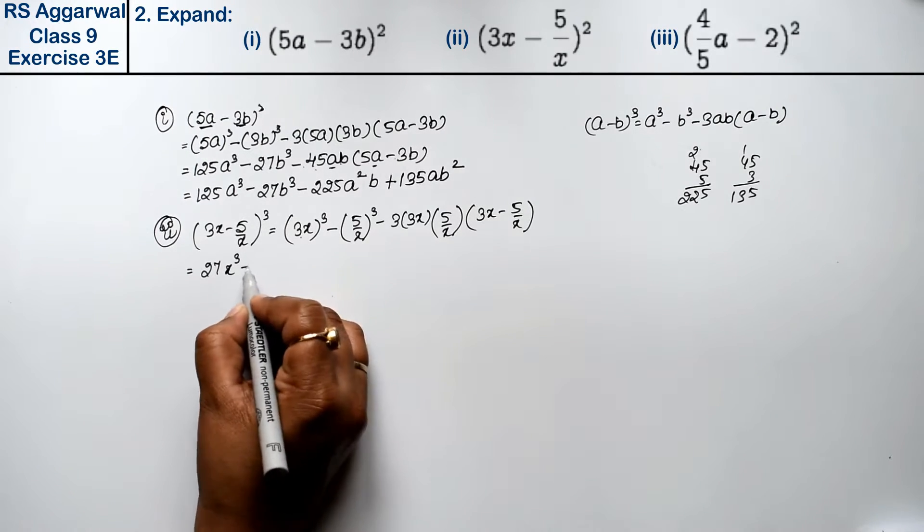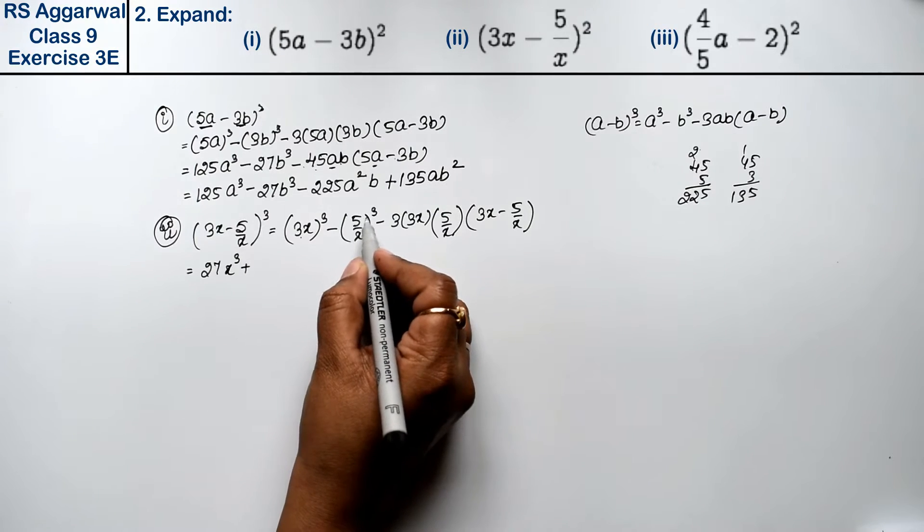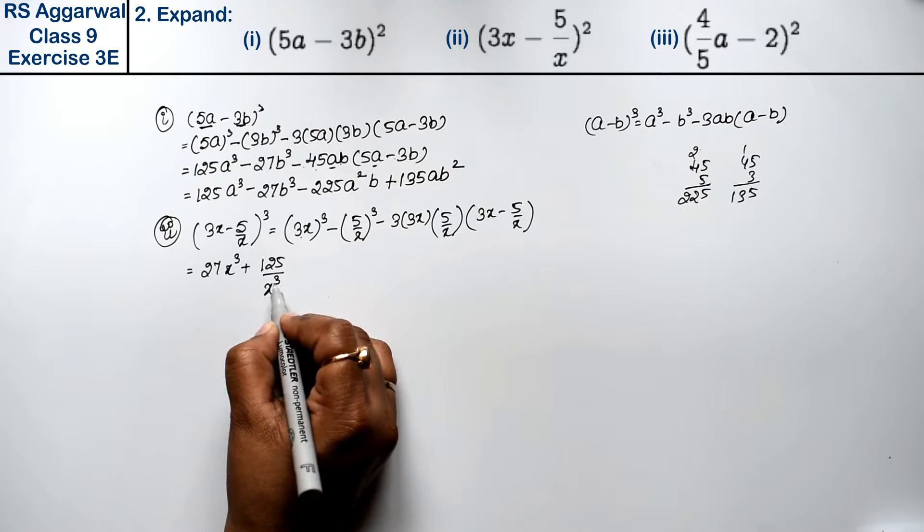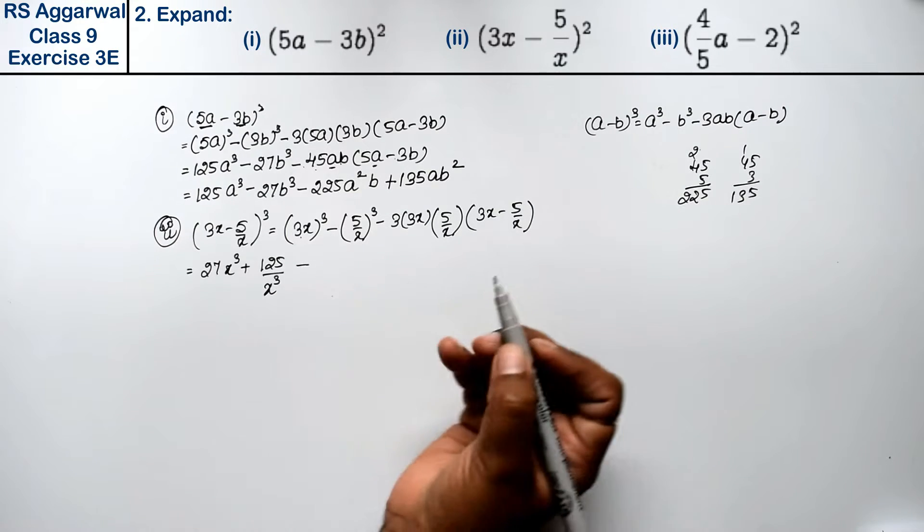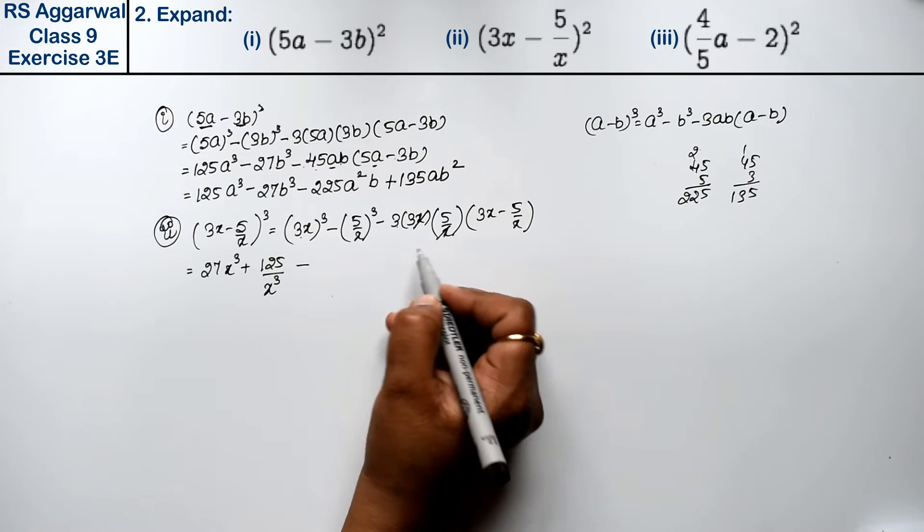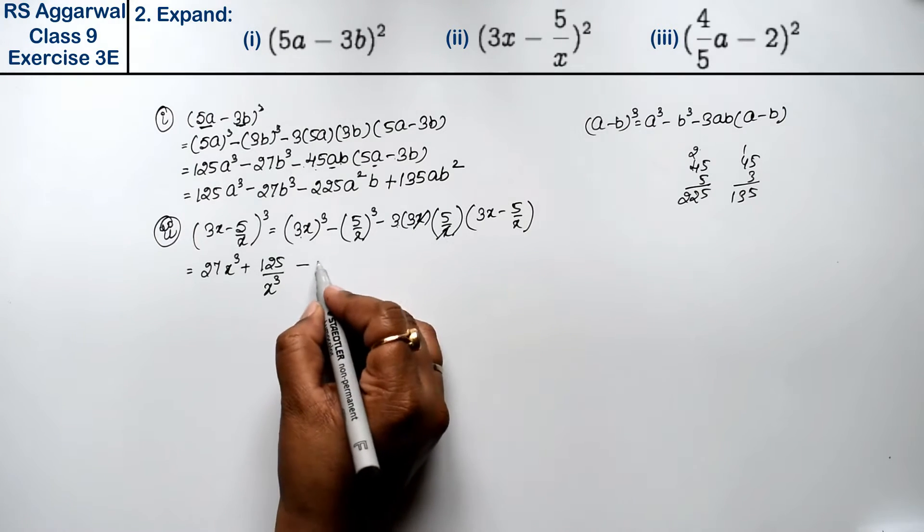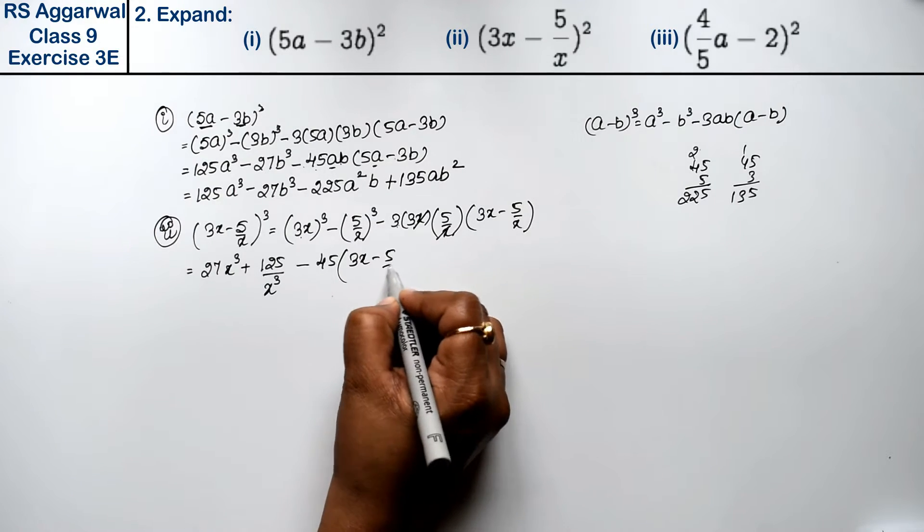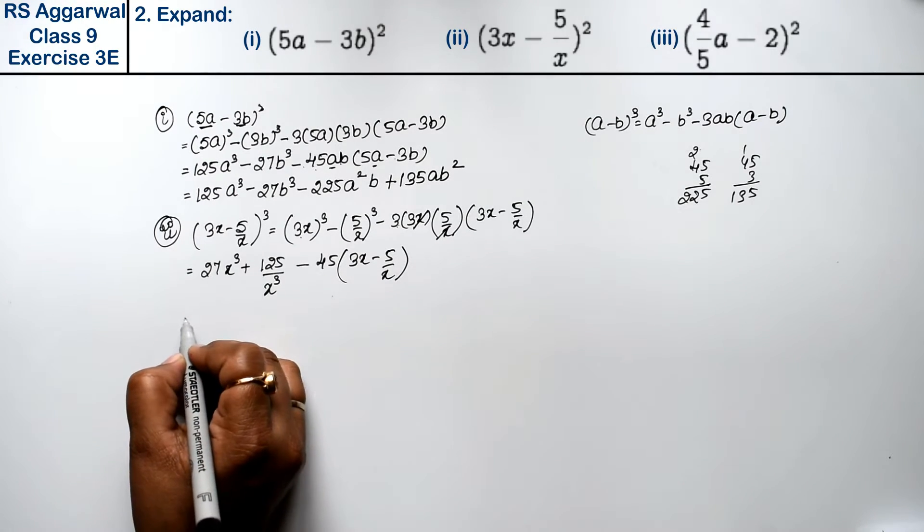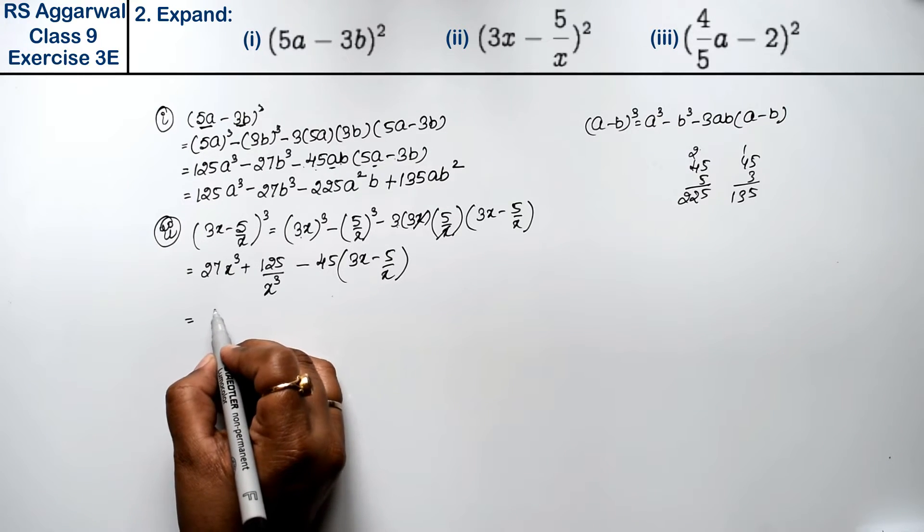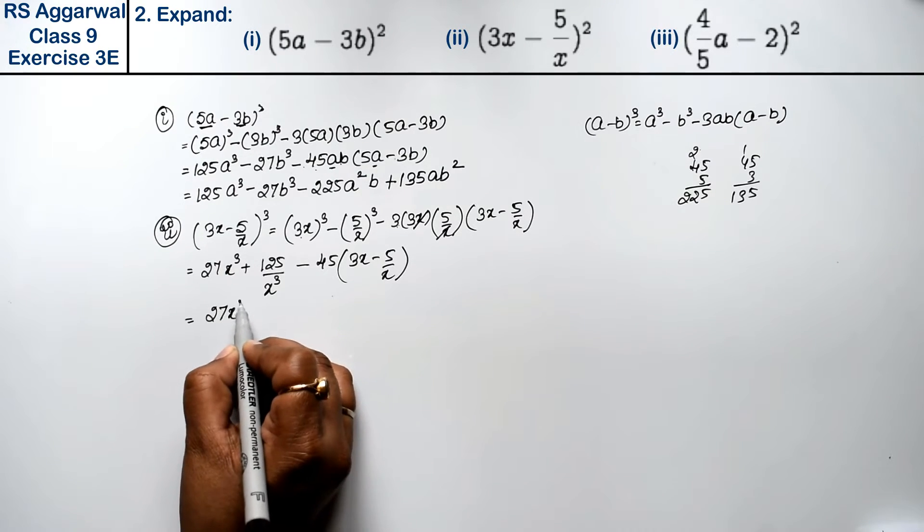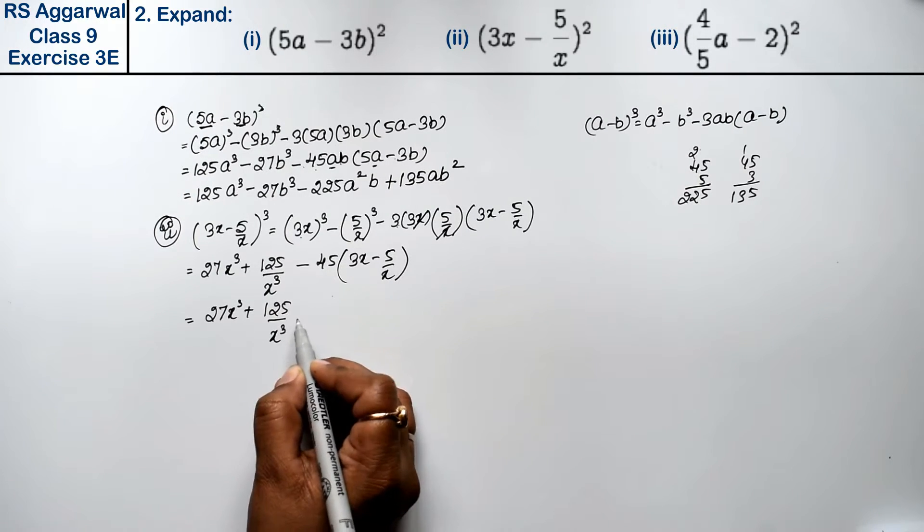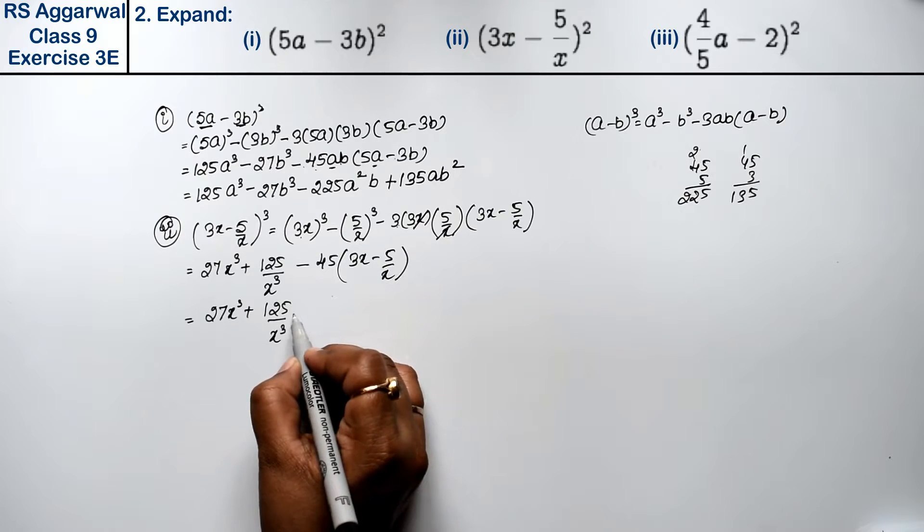A³ kya hooga: 27x³. Plus b³ kya hooga: 5 ka cube that is 125 upon x³, that is x³ minus 3×3 is 9, x×x se 27x² - 5/x.